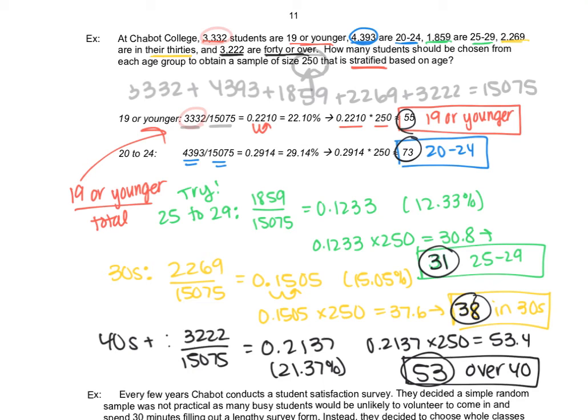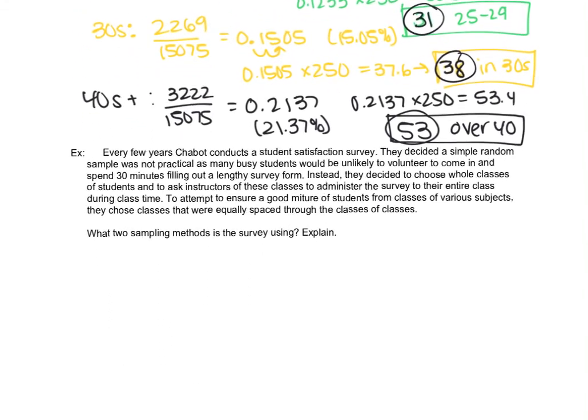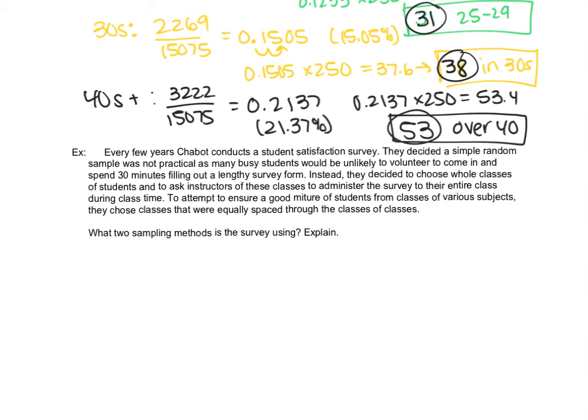And this video is a little on the long side, but there's only one example left, so let's just jump into this, and we'll be done with section 1-3. So our final example is just what kind of sampling methods are they using? You'll see in the question I said they're using two sampling methods, so as we read through this, start thinking about those. So every few years, Chabot conducts a student satisfaction survey. Simple random sampling is just not practical because there's many busy students, and it's really hard to get students to volunteer to come in and spend 30 minutes filling out a survey. So instead, they decide to choose whole classes of students and ask the instructors to administer these classes. So classes sound like clusters to me. So that's a sampling method. We're using classes as clusters.